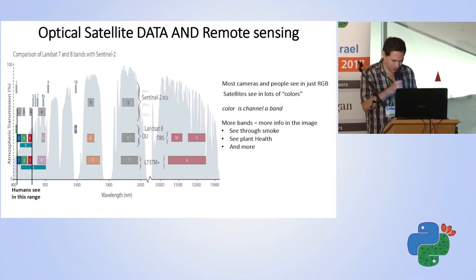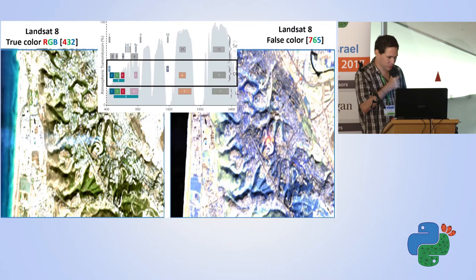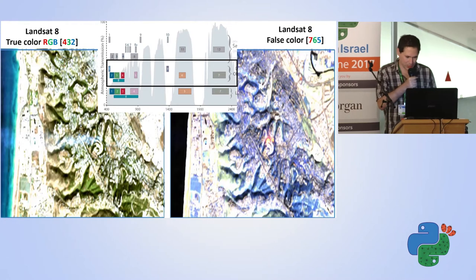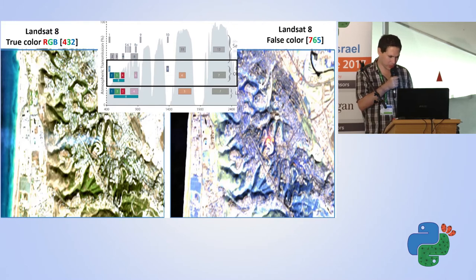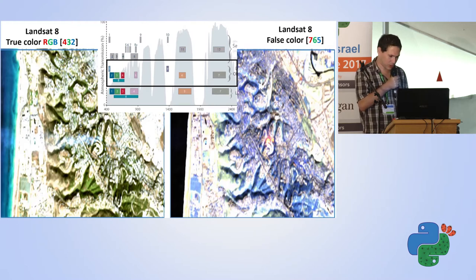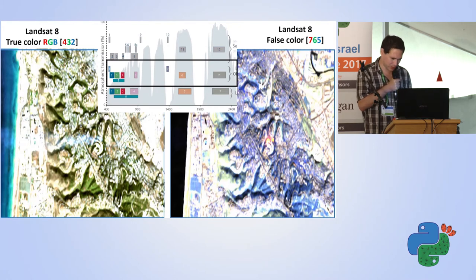This is an example from last year's fire in Haifa. On the true color side, you can see the fire as photographed by the satellite. This is how the human eye sees it — the smoke obscures the fire. On the other side, with false color — bands the human eye cannot see — we can see the fire quite clearly. The vegetation appears a different color because it uses a band outside human vision.